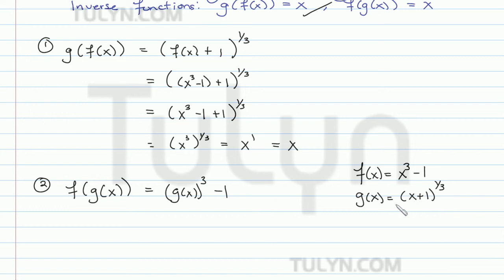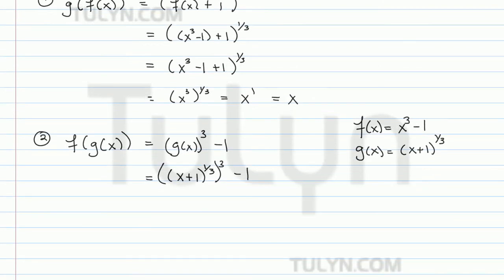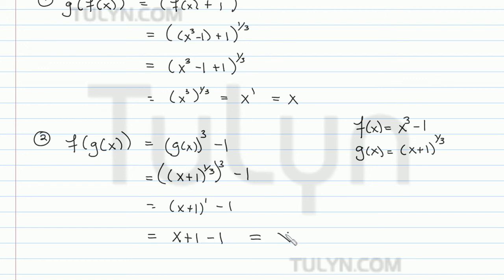We know exactly what g(x) is — it's (x + 1)^(1/3). So we replace it to get [(x + 1)^(1/3)]³ - 1. Evaluating the exponents first, we multiply 3 times 1/3 to get (x + 1)^1, minus 1.